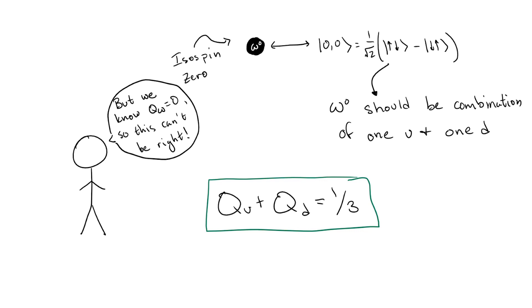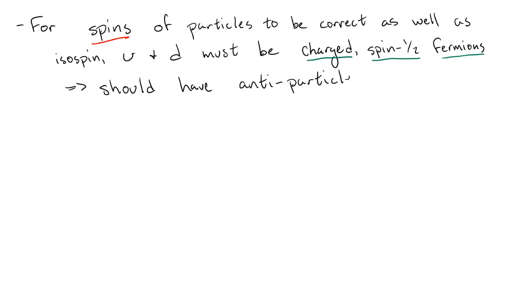Luckily, we still have one trick up our sleeves. Since the fundamental up isospin and down isospin particles are charged, they must also have antiparticles associated with them. But what is the isospin of an antiparticle? Well, we already know of a few particle-antiparticle pairs which have isospin, for example the pi plus and the pi minus.